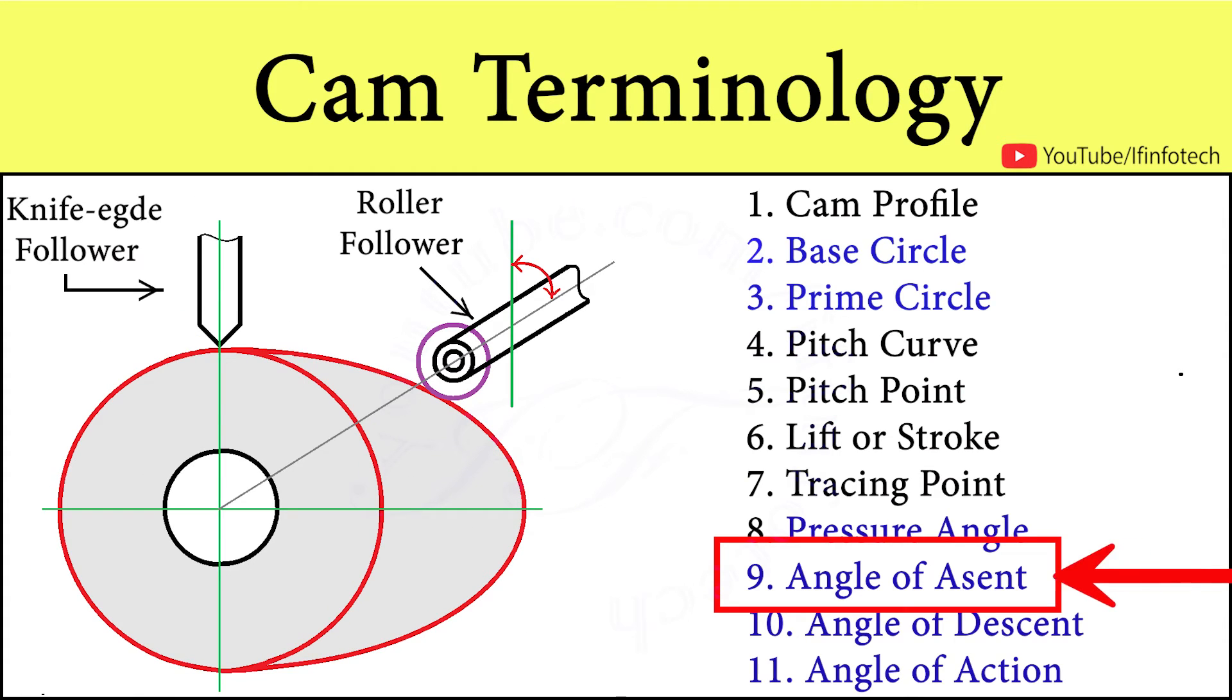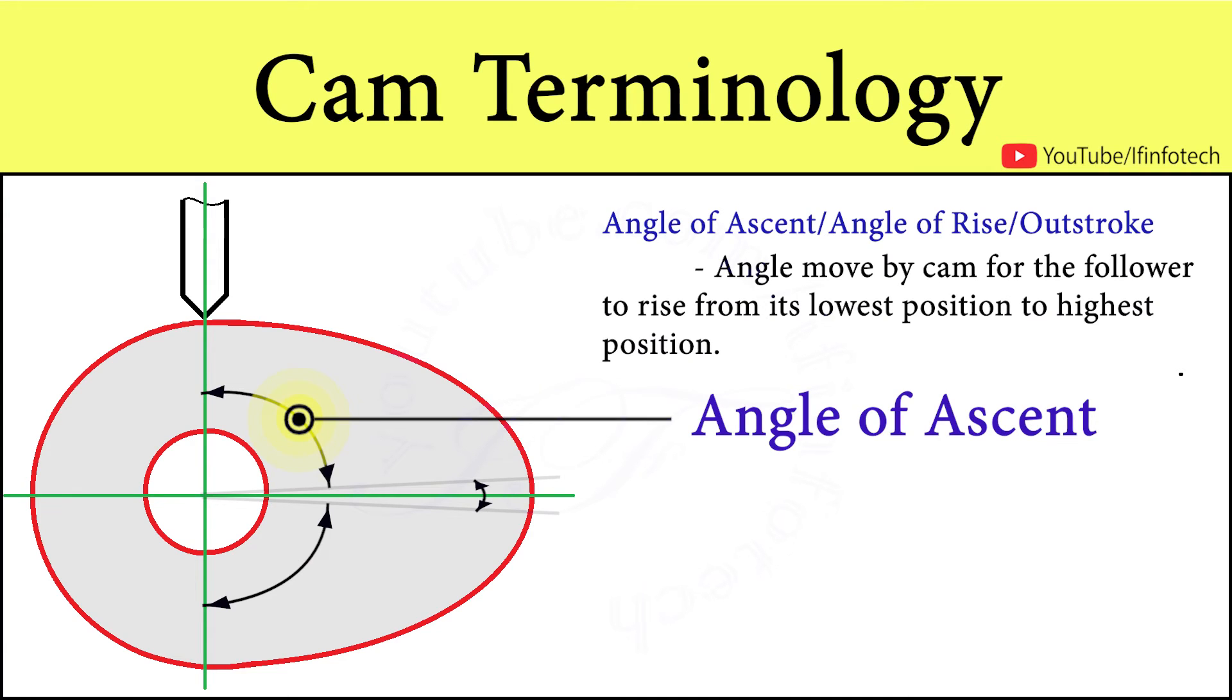Next is angle of ascent. Angle of ascent is the angle moved by cam for follower to rise from its lowest position to highest position.